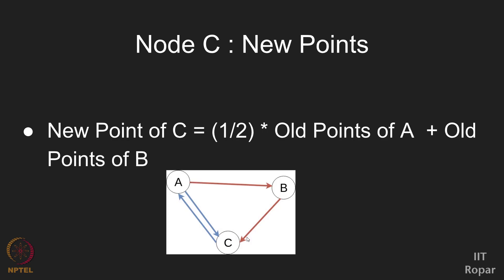Initially all nodes had 100 points, and points are exchanged following the rule: however many outgoing edges you have, share your points equally among all those people. After one round: node A has 100 points, node B has 50 points, and node C has 150 points. With this new state they again follow the same rule. What happens if you keep playing for a thousand or ten thousand iterations? We will see that in the next part.